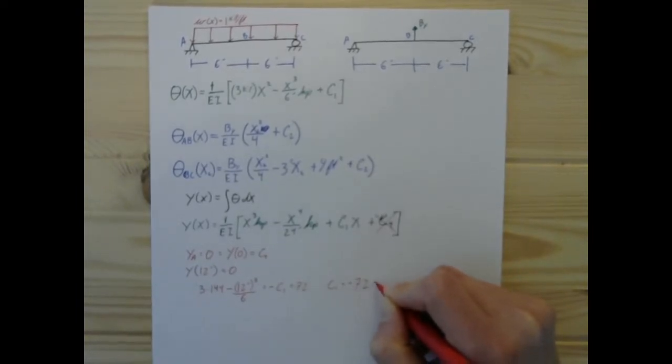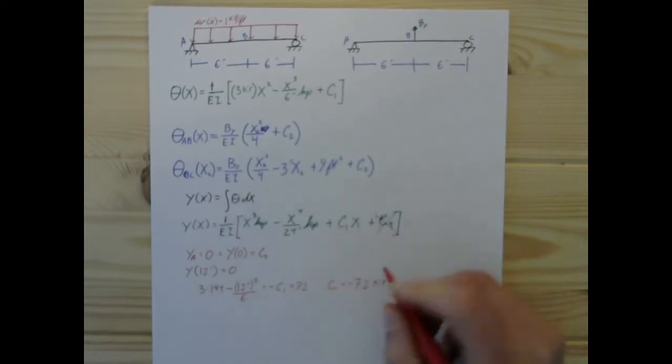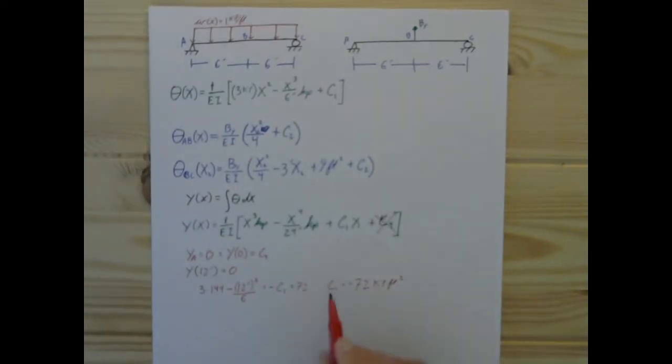So C1 is negative 72 kip, what is that, for this, that's going to be kip feet squared for C1.